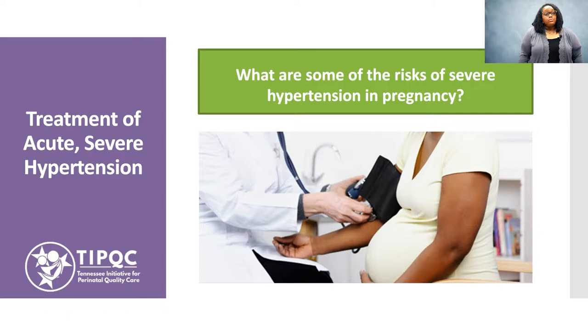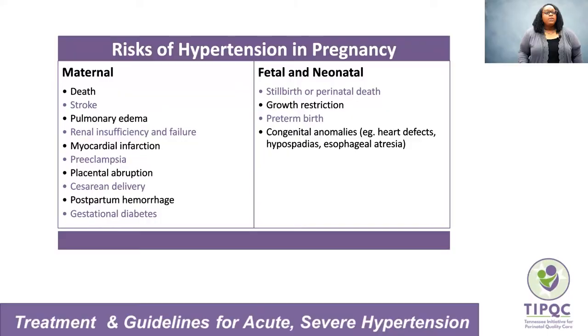When discussing the treatment of severe hypertension, one of the first questions that naturally arises is: what are some of the risks of severe hypertension in pregnancy? Hypertensive disorders of pregnancy remain a major health issue for women and their infants in the United States. Preeclampsia, either alone or superimposed on preexisting or chronic hypertension, presents the major risk. Risks to the mother include death, myocardial infarction, and placental abruption, among others. Risks to the fetus and neonate include preterm delivery, growth restriction, and perinatal death, among others.